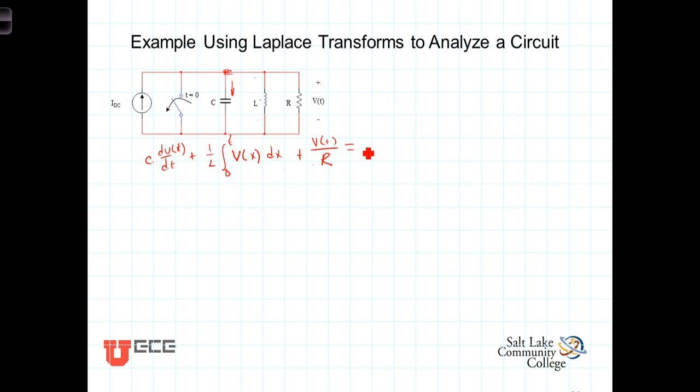Plus, now the current leaving the node going through the resistor here is just going to be V of T divided by R. The sum of all those things must equal the current coming in, which is I dC. And the way we're going to represent this switching event is we're going to multiply this constant dC by U of T. That is bringing in this idea that it wasn't constant. It was zero before the switch was opened. The current coming into this was zero before the switch opened.